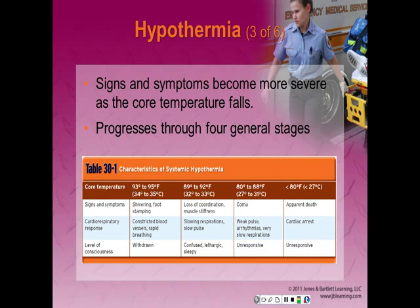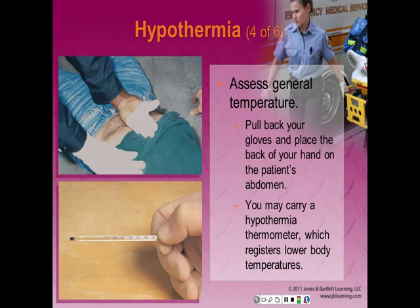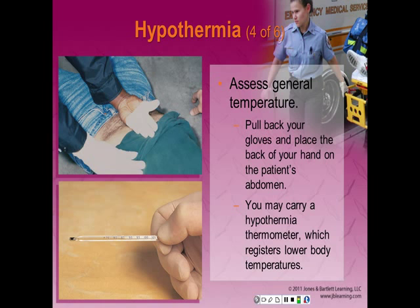Table 30-1 gives you the characteristics of systemic hypothermia. It shows the core body temperature levels and what signs and symptoms change as it gets colder, how the body responds, and what the level of consciousness is. These tables make great study materials. To assess general temperature, pull back your glove and place the back of your hand on the patient's abdomen — if it feels cool, the patient is likely experiencing a generalized cold emergency. A hypothermia thermometer, inserted into the rectum, is required for accurate core temperature reading, as regular thermometers will not register these low temperatures.